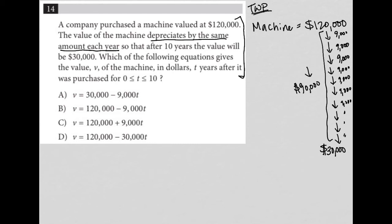Let's keep reading. Which of the following equations gives the value V of the machine in dollars T years after it was purchased? T has to be between 0 and 10.